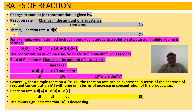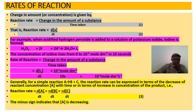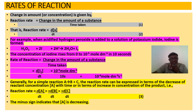The rate of reaction is the change in amount or concentration of a substance divided by time — that is equation one. Equation two expresses a small change in x, where x is the concentration or amount, divided by a change in time.